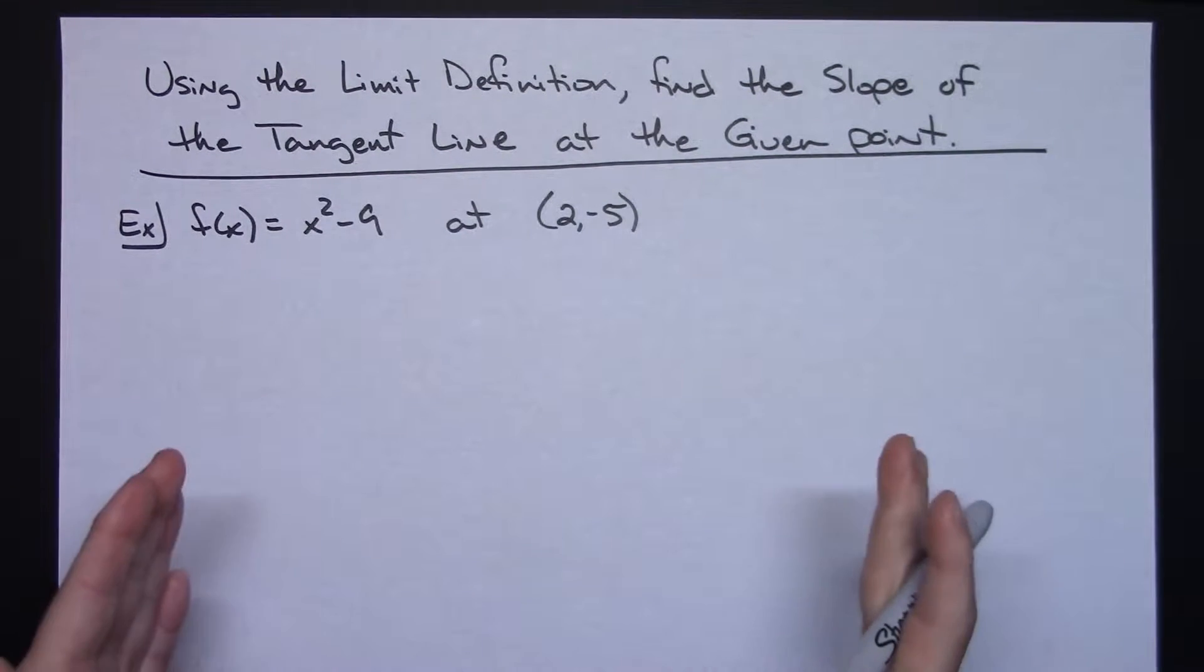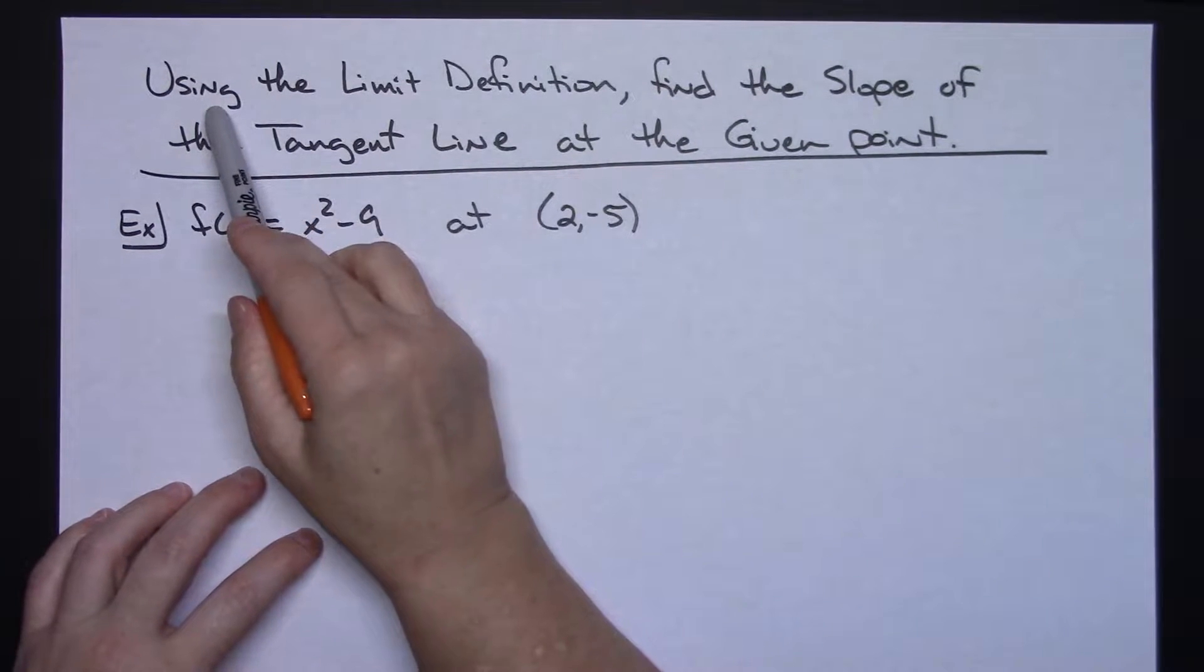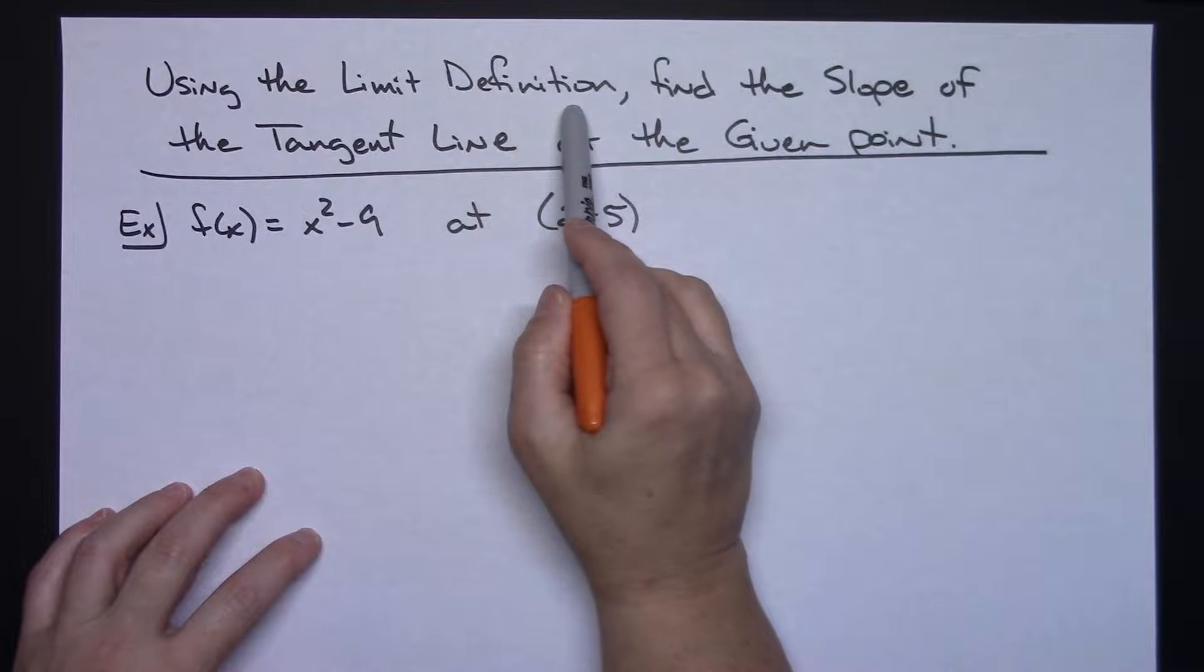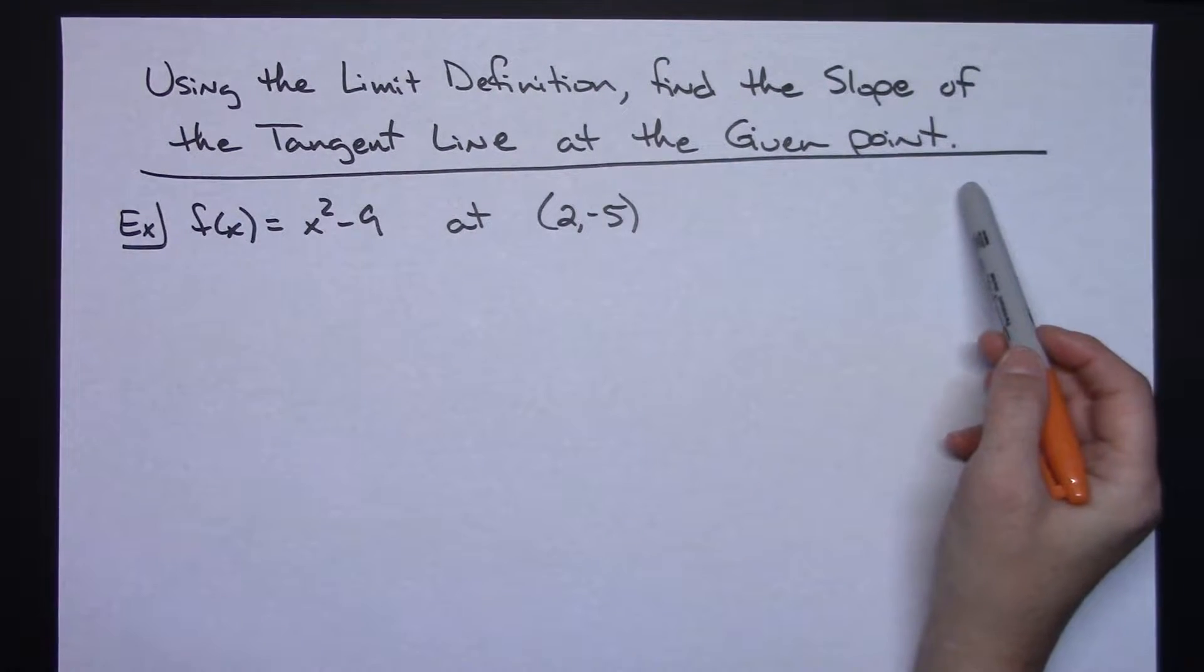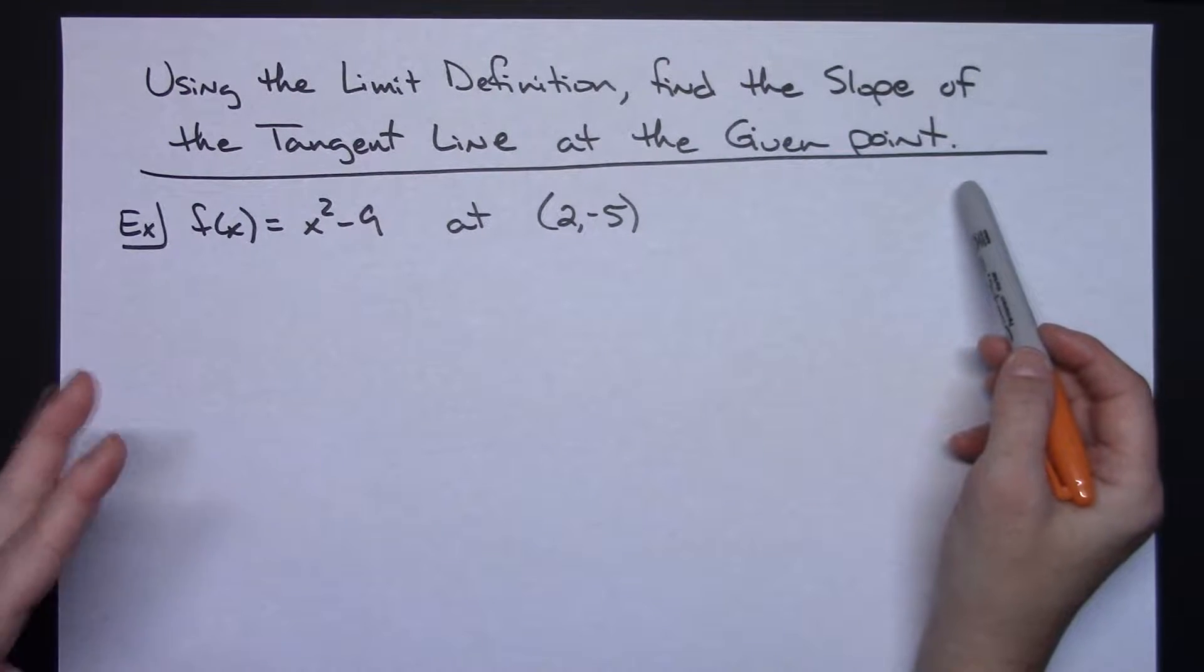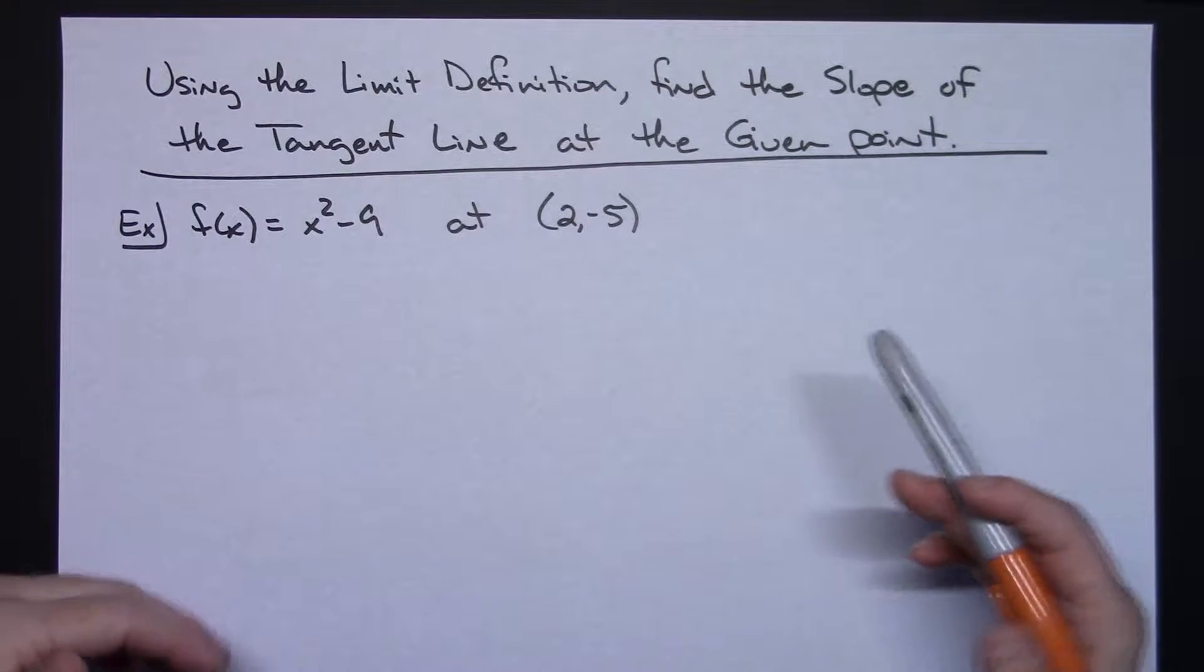In this video I'm going to work out one example showing you how to use the long formal limit definition in order to find the slope of the tangent line at the given point. You would probably only do this very early on before you actually learned how to take derivatives.